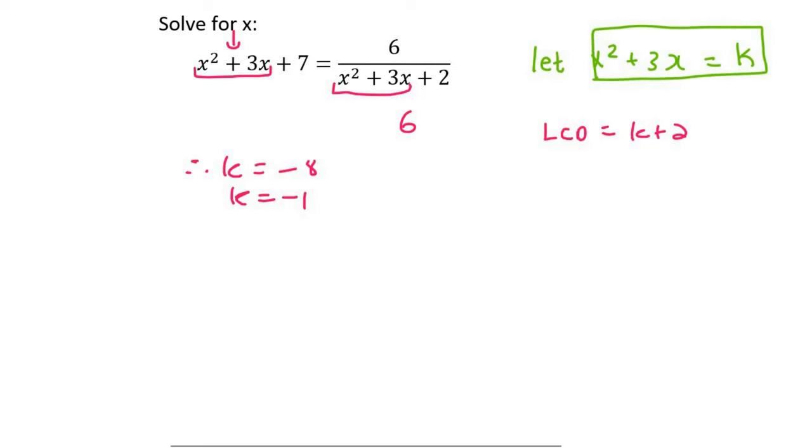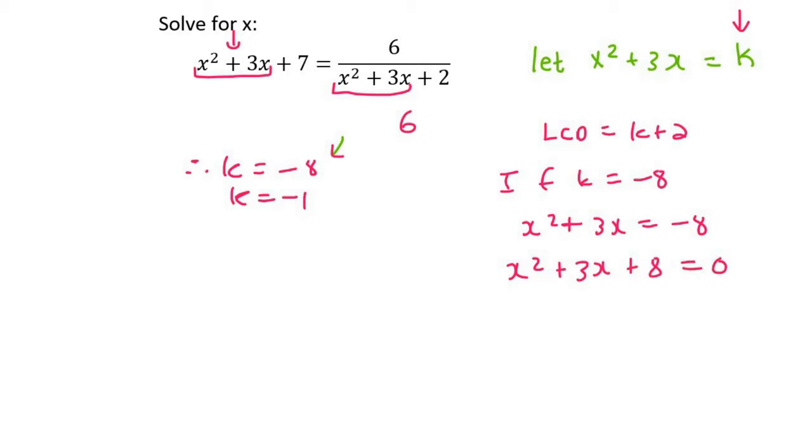So now we can use that. So let's start with the first one where k is minus 8. So we can say if k is equal to minus 8, then I'm going to plug that in over here. So we're going to get x squared plus 3x equals minus 8. Now we just solve this as per normal. So we bring that 8 over like that. And now we solve.